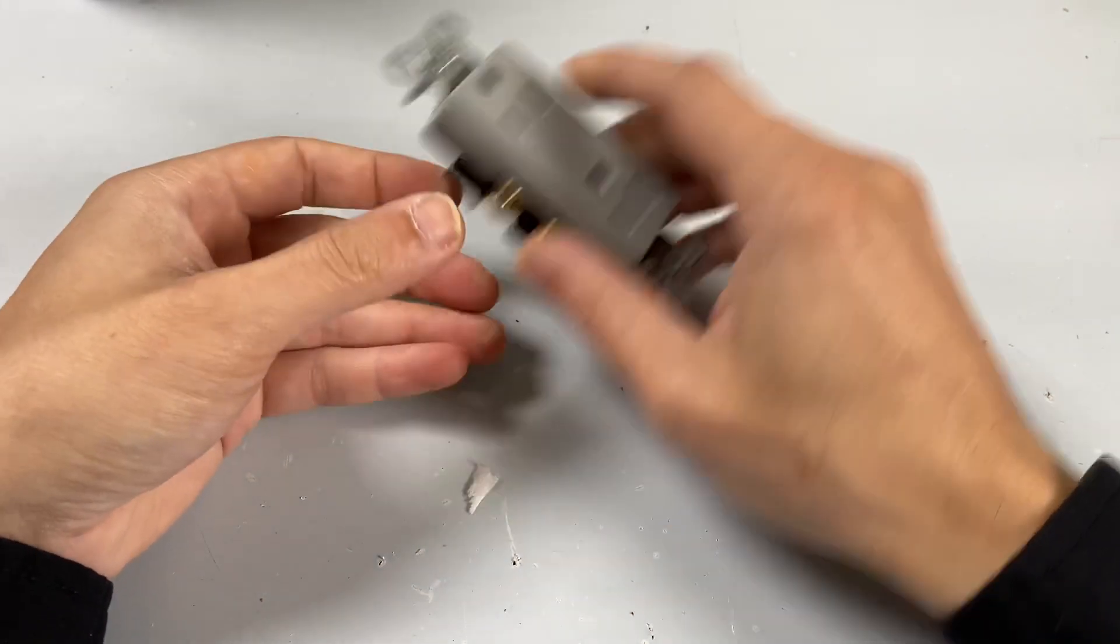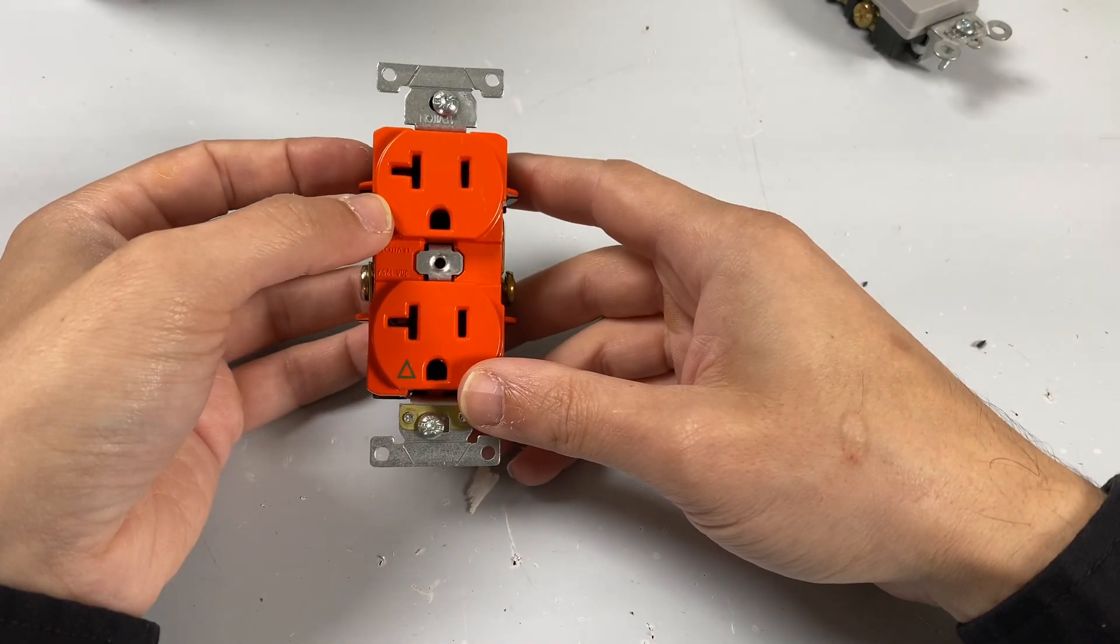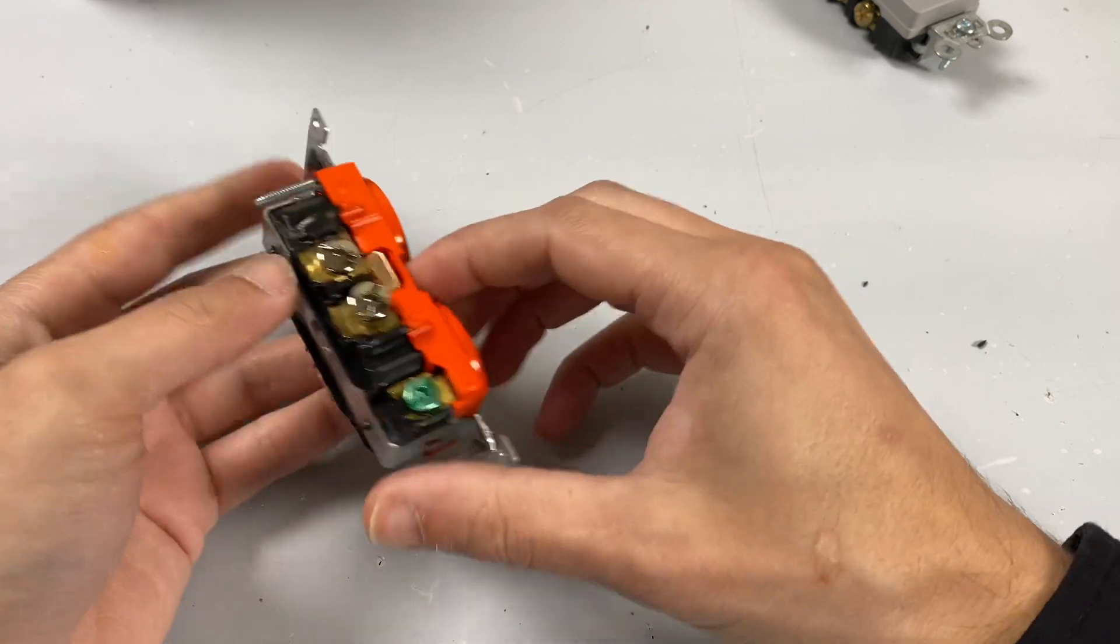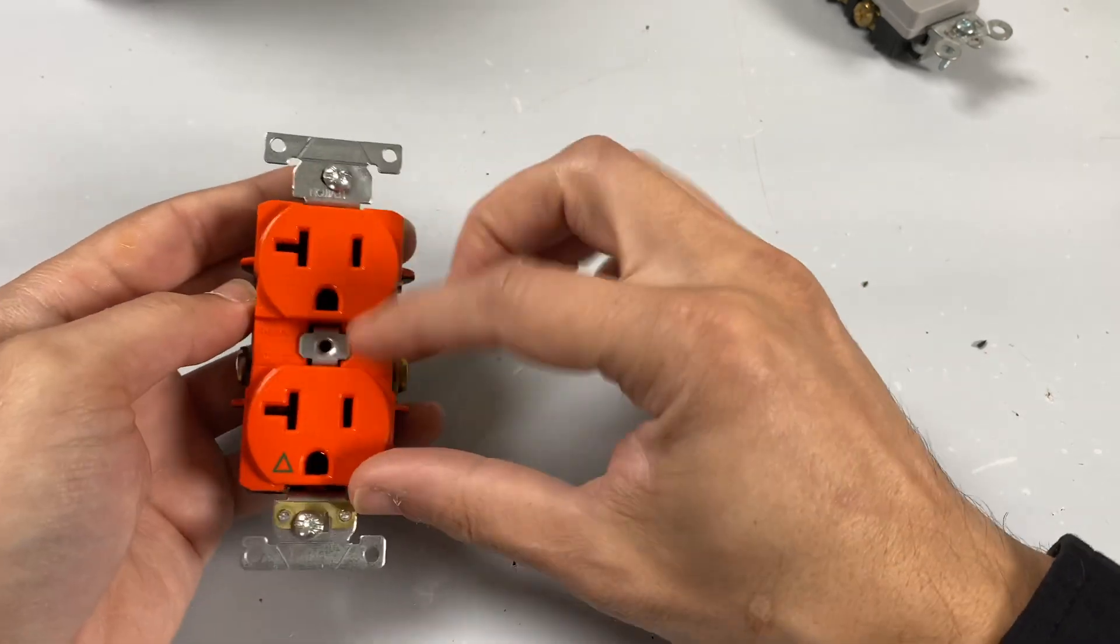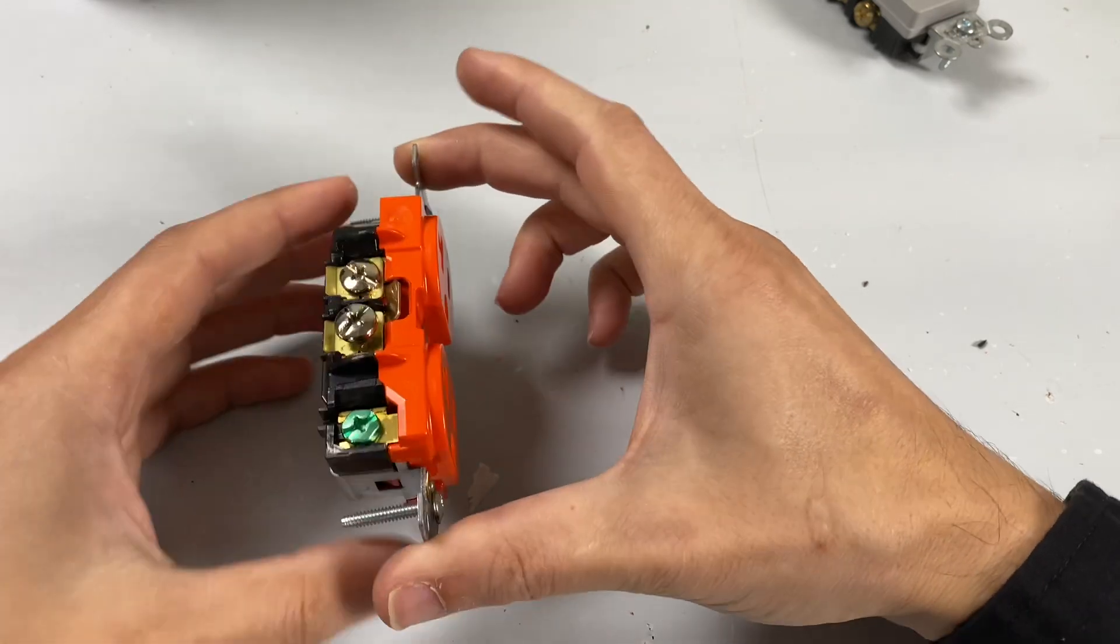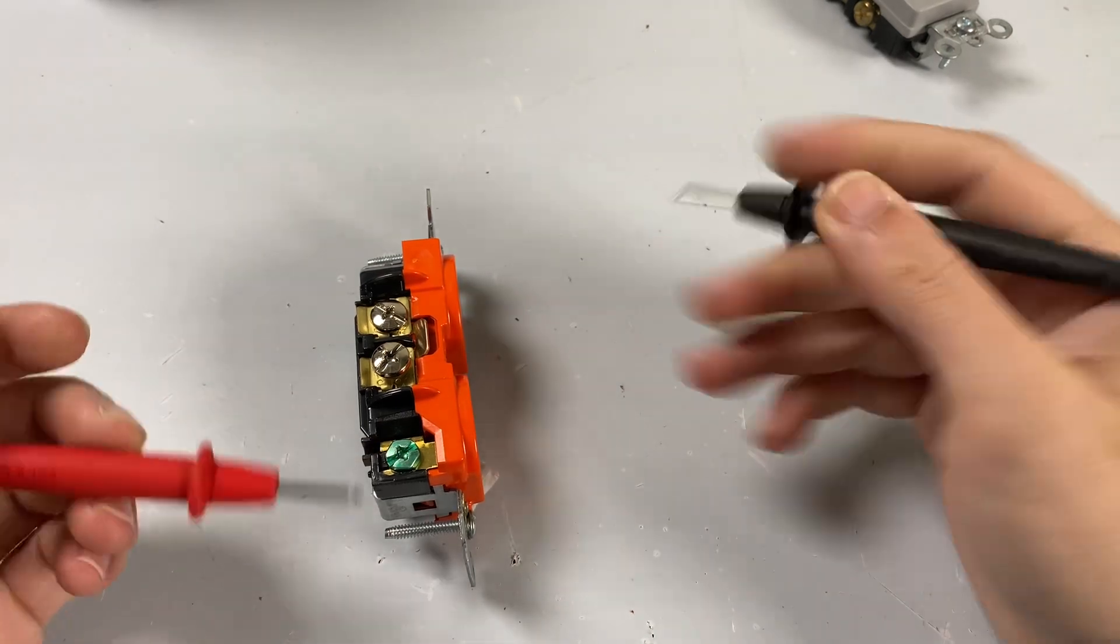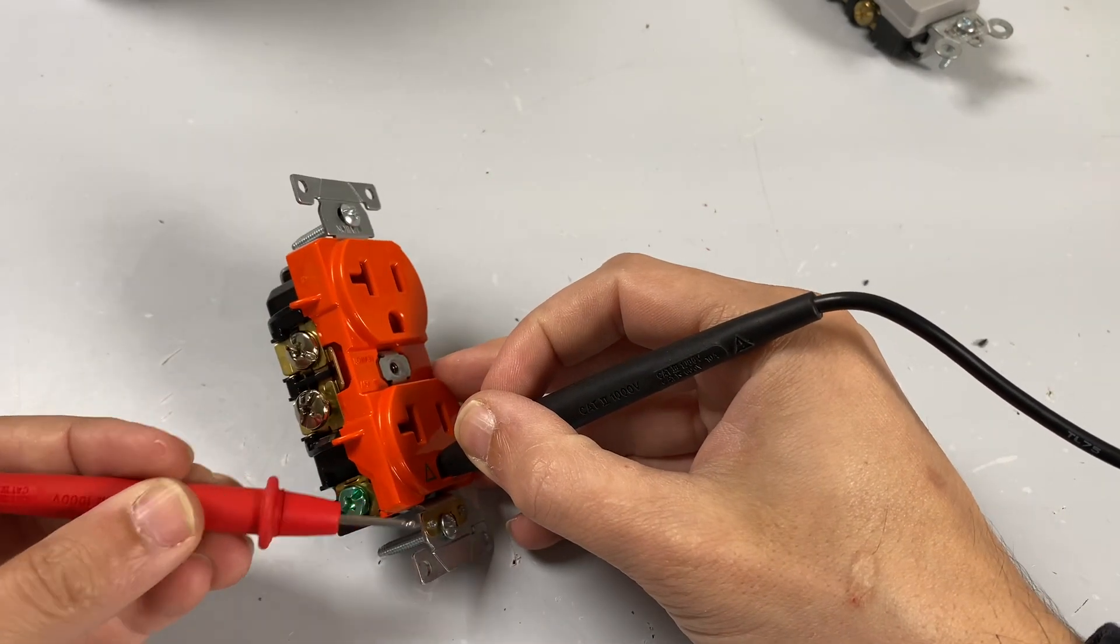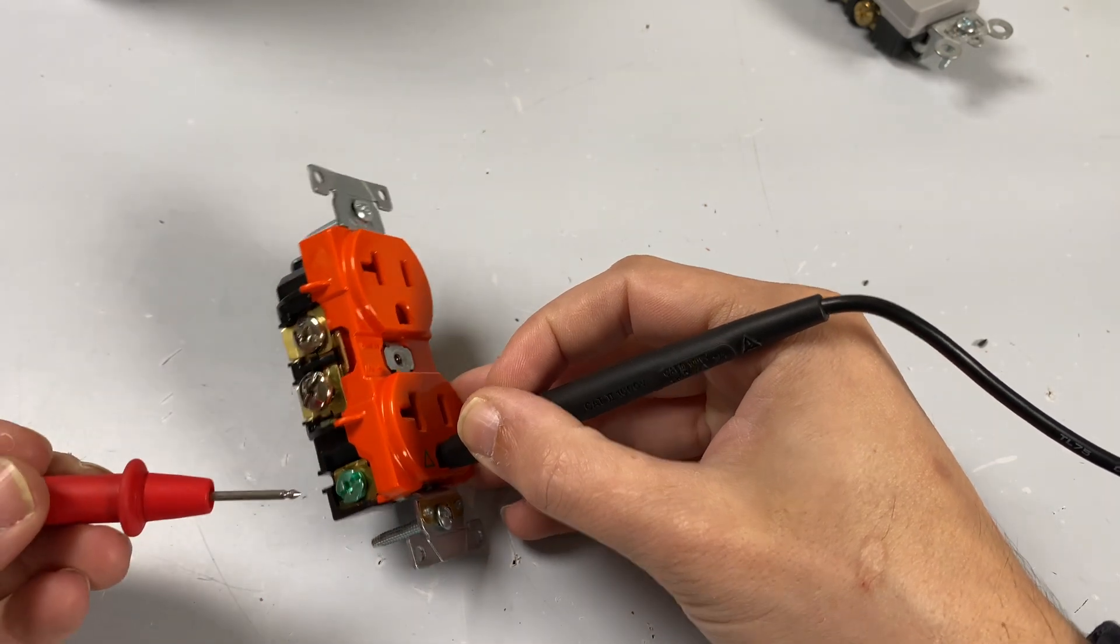The way that we get around that is we use what's called an isolated ground. What an isolated ground outlet is, is it separates this part of your outlet from the chassis. So if we take our multimeter in here and we touch our ground pin and our chassis, we don't get continuity, which means this is isolated.